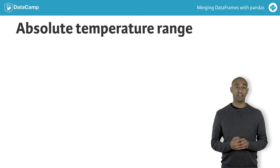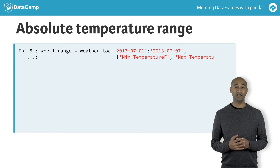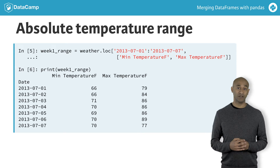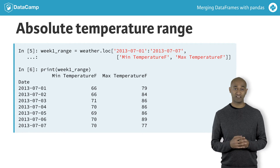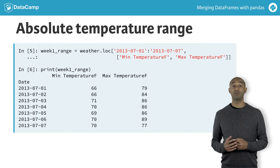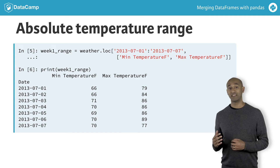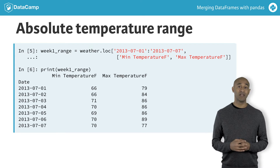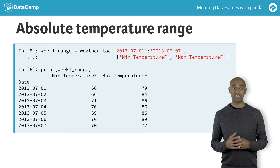Let's find the percentage variation in temperature in the first week of July — that is, the daily minimum and the daily maximum temperatures expressed as a percentage of the daily mean temperature. We can compute this by dividing both the min temperature F and the max temperature F columns by the mean temperature F column and multiplying both by 100.